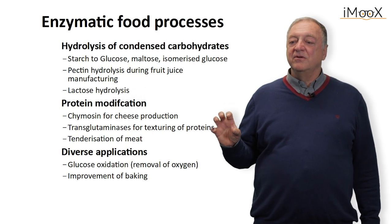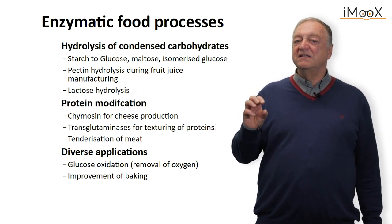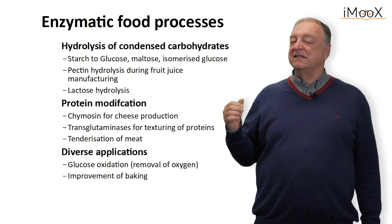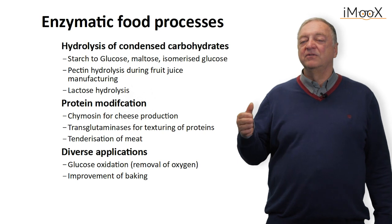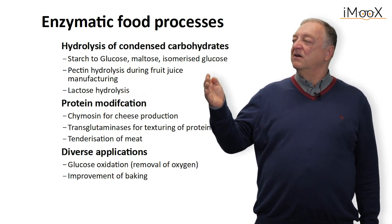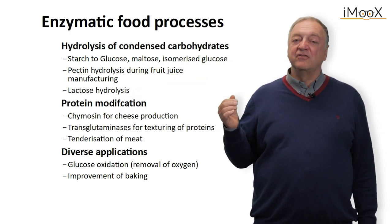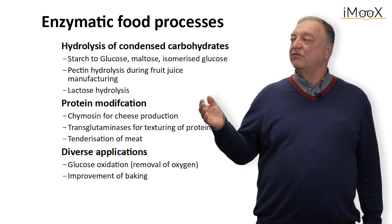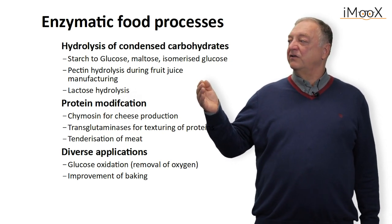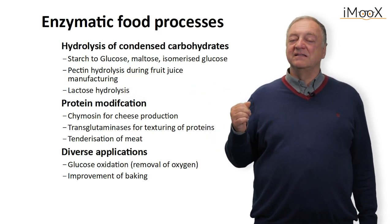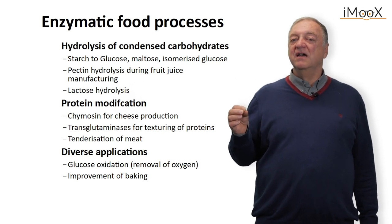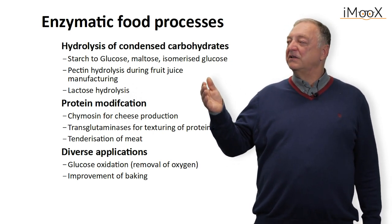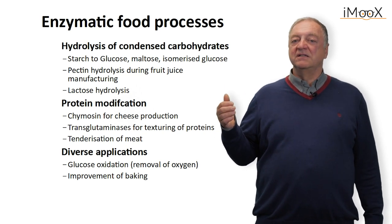In addition to these microbial processes, we have the possibility of using enzymes for single reactions that can be carried out with foods. For example, the hydrolysis of condensed carbohydrates using amylases for production of glucose, fructose, and other carbohydrates. Also very important for fruit juice manufacturing, we can hydrolyse pectin using pectinases, which improves the productivity during pressing of the juice. Another important enzyme is lactase, or beta-glucosidase, which hydrolyses lactose — especially useful for people who have lactose intolerance — and supports the safety of foods.